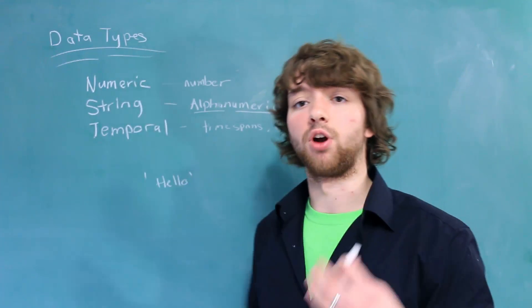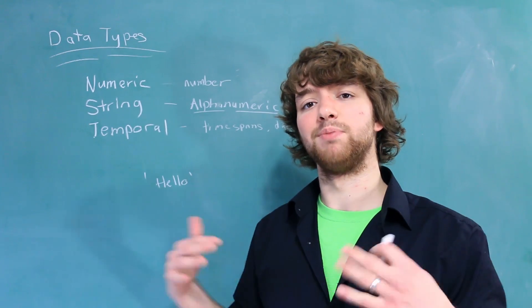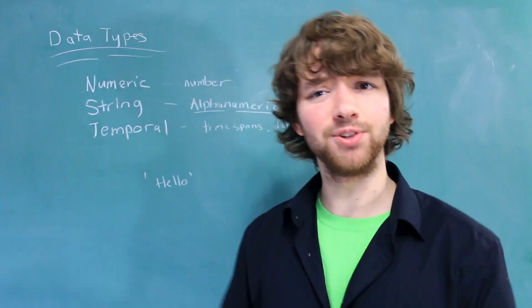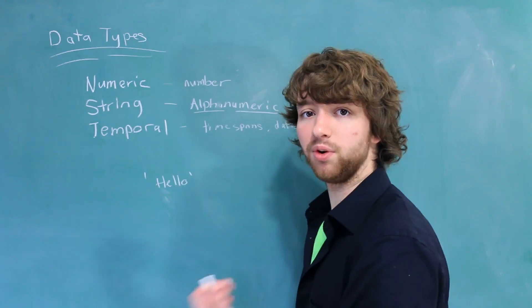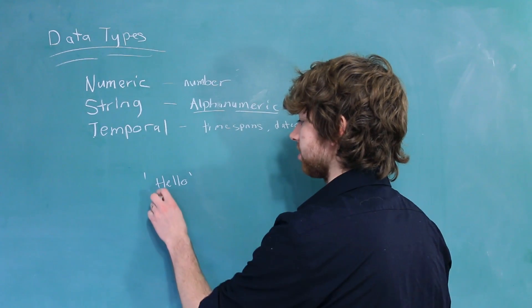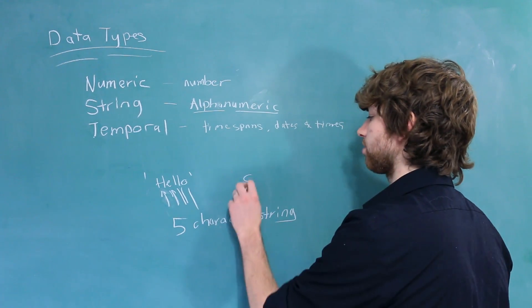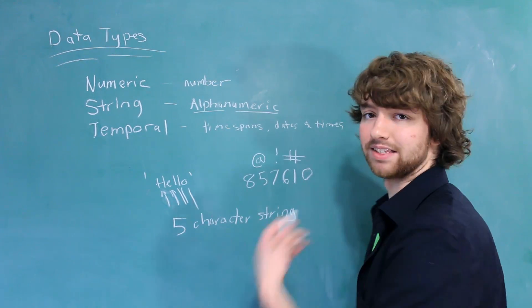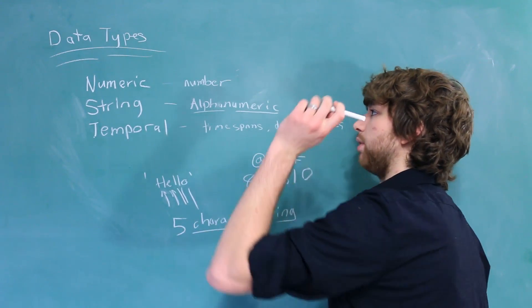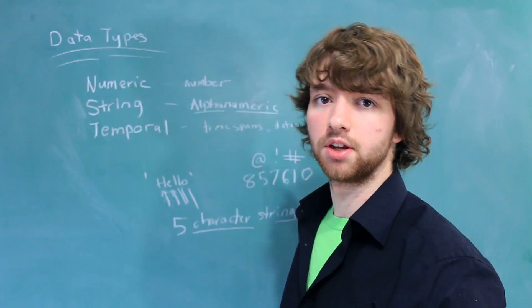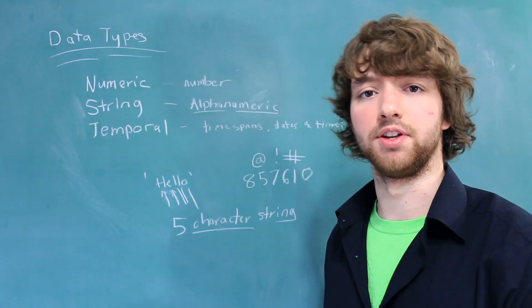Now in each one of these categories, there are some different data types, so in the upcoming videos we are going to discuss those in more detail. But this video is kind of just to get you a rough overview so when we start talking about them, you are not like, what? An important thing to know is that each one of these is known as a character. So this is a five character string. Other examples of characters are numbers, symbols, as well as letters from other languages. So characters go inside of string data types, but numeric data types only take numbers.